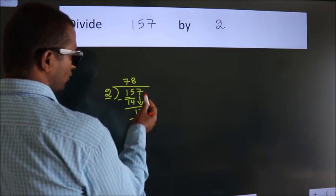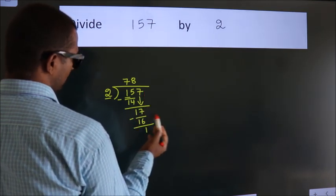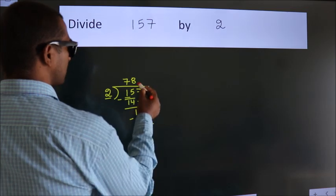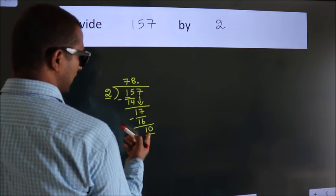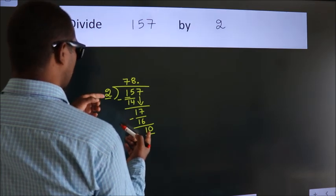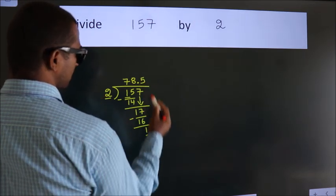After this, no more numbers to bring it down. So what we do is, we put dot, take 0. So, 10. When do we get 10? In 2 table, 2 times 5 is 10.